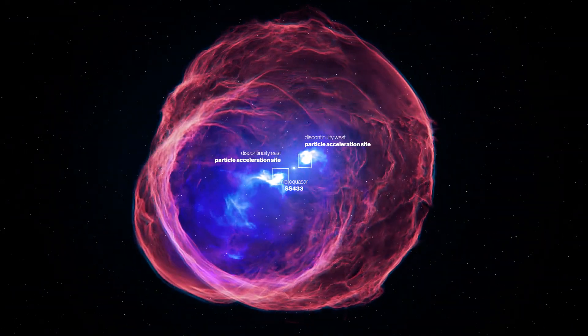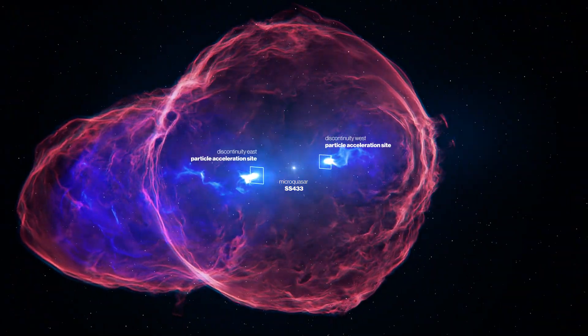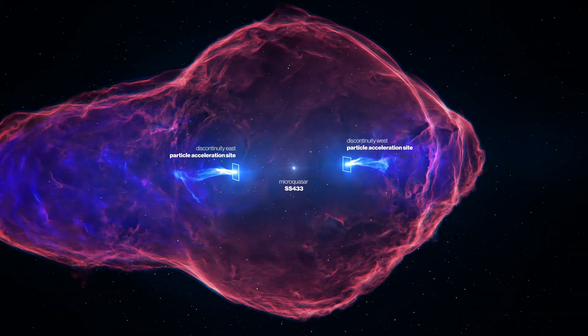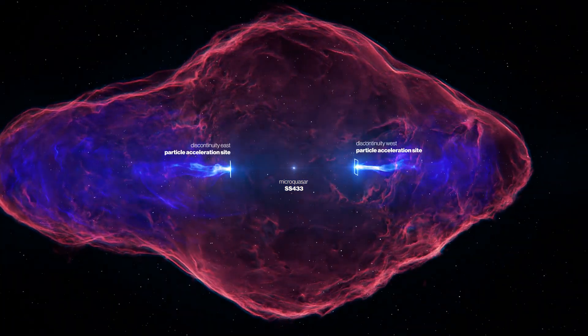Scientists from the HESS collaboration used gamma-ray observations to understand the acceleration and transport of relativistic electrons in the jets of this microquasar.